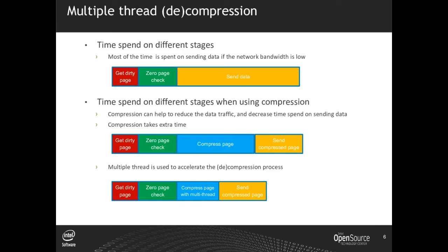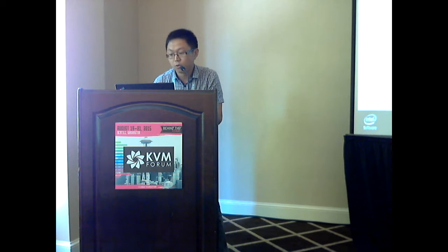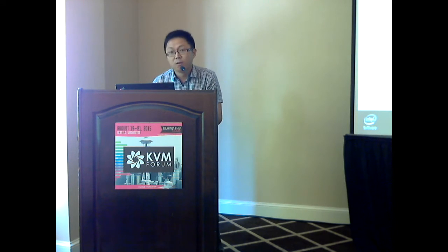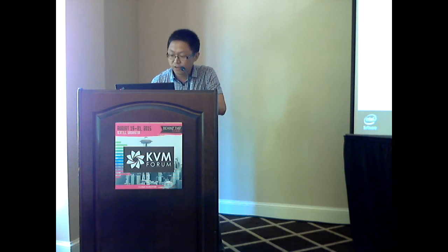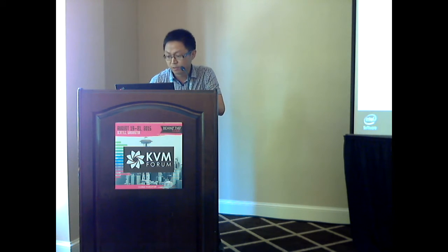Let me explain why multi-thread compression can accelerate live migration. The first chart shows the time spent on different stages when processing a guest RAM page. In the low network bandwidth environment, most of the time is spent sending data to the destination. Compression can make the page data smaller, so sending the compressed page will take less time. But compression itself takes extra time. If compression is fast enough, we can shorten the total time spent on processing the page data.